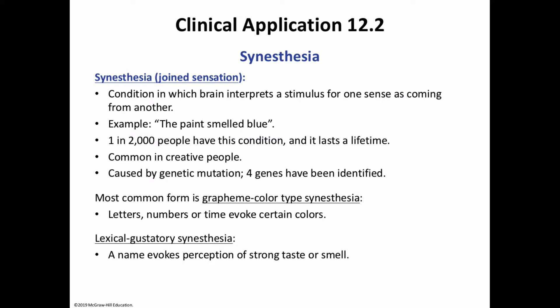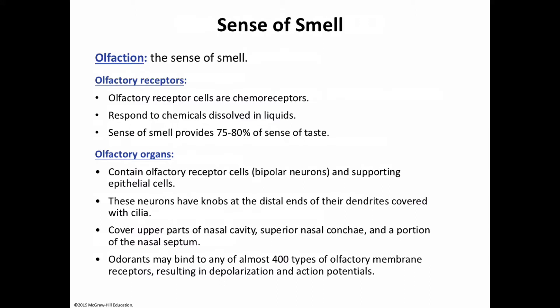Human olfaction is less acute than that of many other animals, but the human nose is not a slouch when it comes to the sense of smell. There are as many as six million specialized cells that aid in the sense of smell. The olfactory receptor cells, also known as chemoreceptors, respond to chemicals dissolved in liquids. They are within the olfactory epithelium, which is made up of pseudostratified cells.